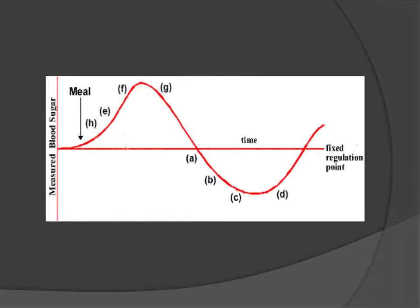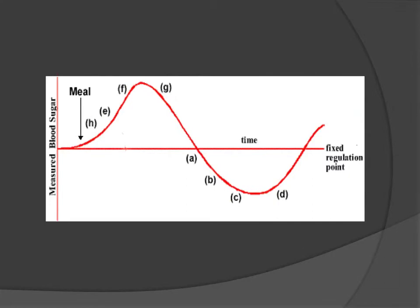The decrease back down in glucose occurs because insulin is telling the body to take it up and telling the liver to store it as glycogen. As it drops below the set point, the production of insulin is stopped and instead glucagon is produced by the alpha cells within the islets of Langerhans. Glucagon acts upon the liver and tells it to convert glycogen back into glucose, which is then released into the bloodstream. The glucose rises back up, and you get this kind of sigmoidal, wavy curve — insulin acting, glucagon acting, alternating — with large fluctuations immediately following a meal.